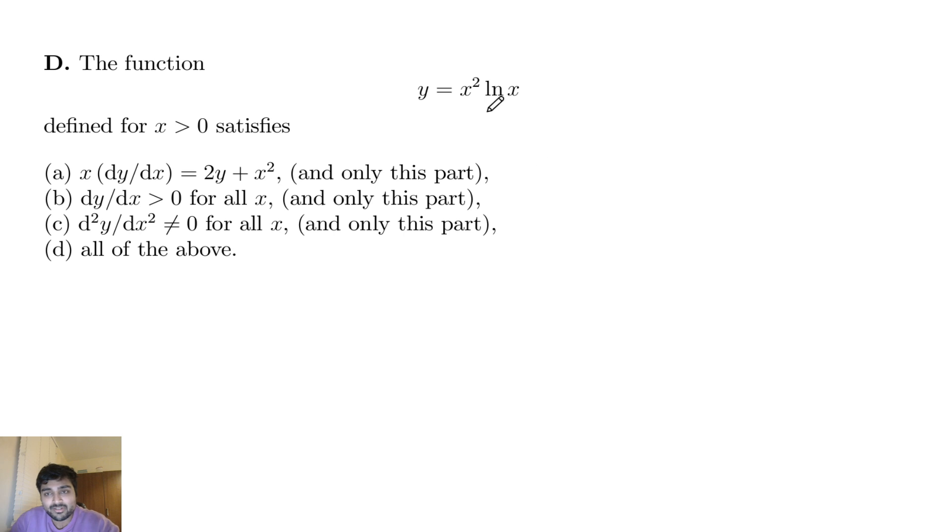These are all to do with the derivative, so maybe I should just calculate the derivative of this. So y prime is, if I just use the product rule, this is 2x times ln x plus x squared times 1 over x. And if I just simplify and factor out the x, that's x multiplied by 2 ln x plus 1, like so.